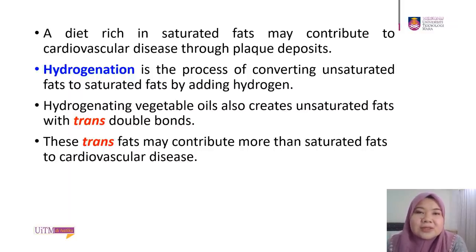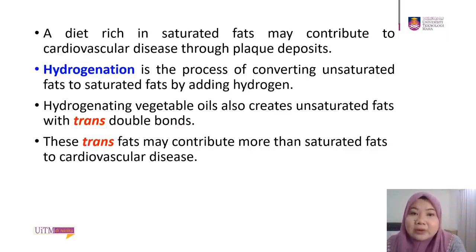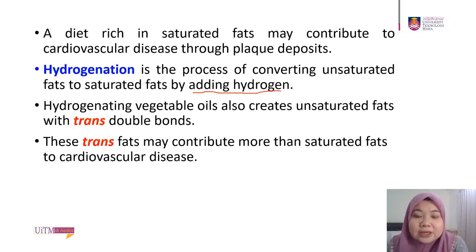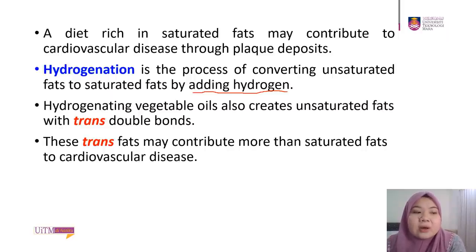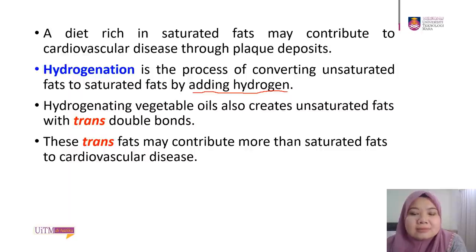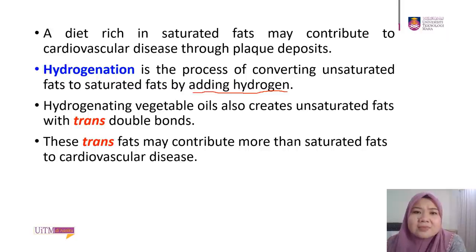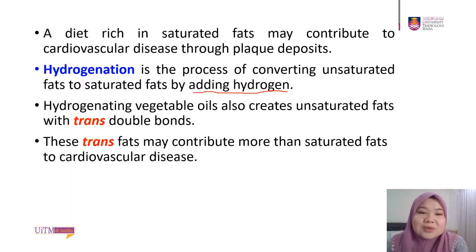A diet rich in saturated fats may contribute to cardiovascular disease through plaque deposits. One process that can increase saturated fat consumption is hydrogenation — the process of converting unsaturated fats to saturated fats by adding hydrogen. This is common in the food industry to prolong the shelf life of fat products. Hydrogenating vegetable oils also creates unsaturated fats with trans double bonds — known as trans fats — which may contribute even more than saturated fats to cardiovascular disease.